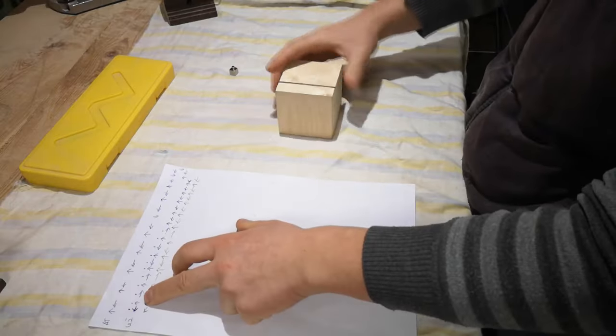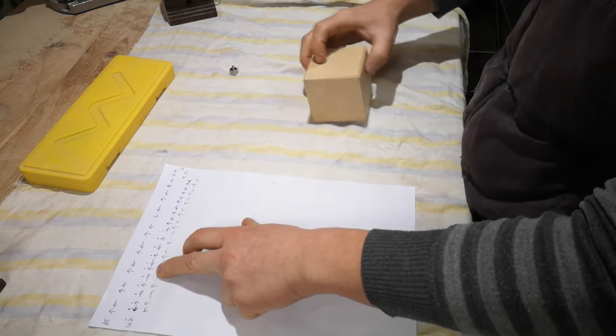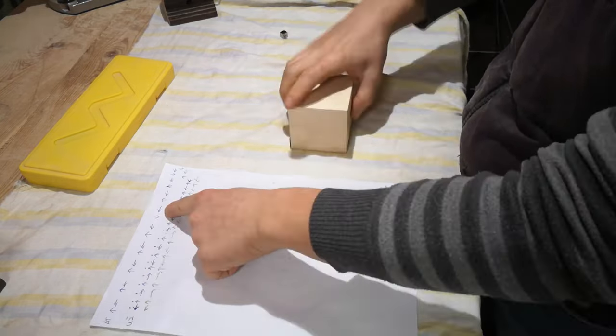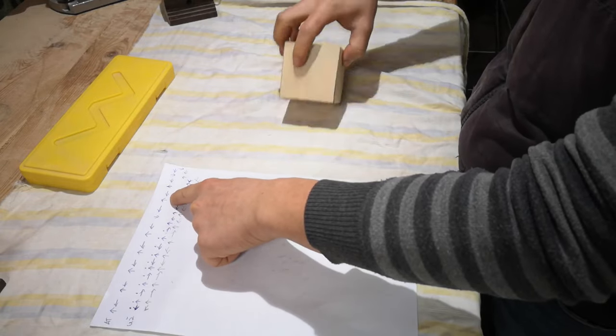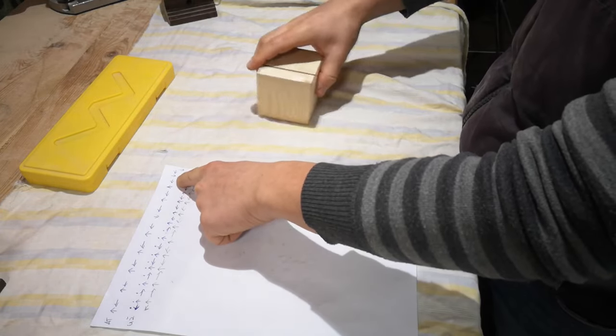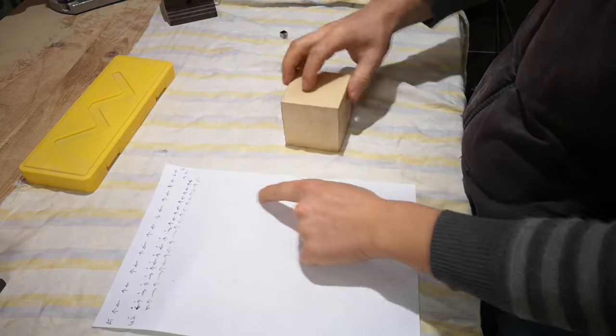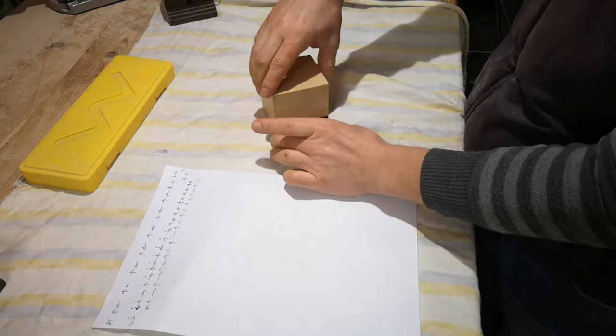That magnet is what disengages the latch of the box's lid, and only when it's in a particular position. You solve the puzzle by rolling the box in a particular sequence of rotations to move the magnet into its unlocked position. It's a really clever design, and it forces me to think of plywood as a three-dimensional material instead of just a sheet good.